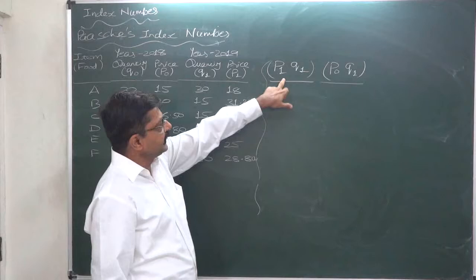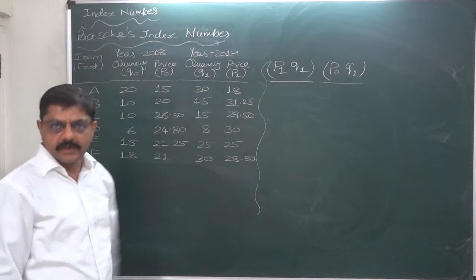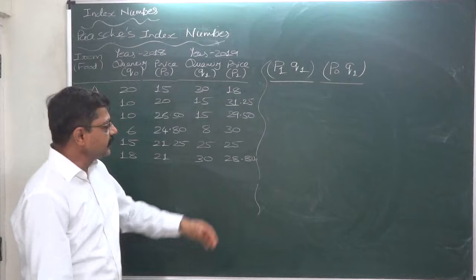First column we need is P1Q1. That means we need to calculate the cost of current year quantity and current year price. This is actually the reality of the current year. The total of this column will be the total cost we have actually paid during the current year to consume this much quantity of all these six items.